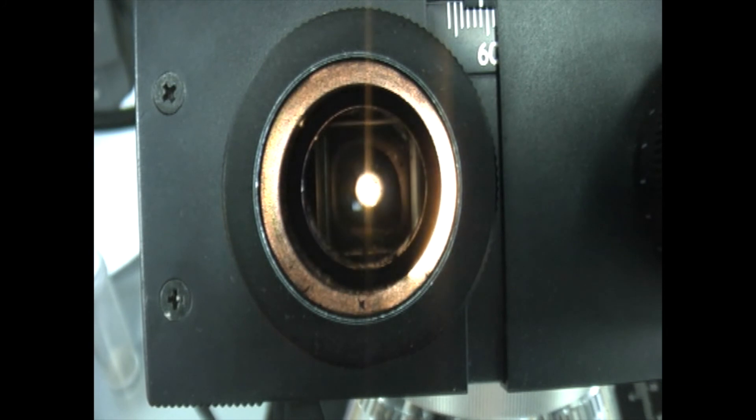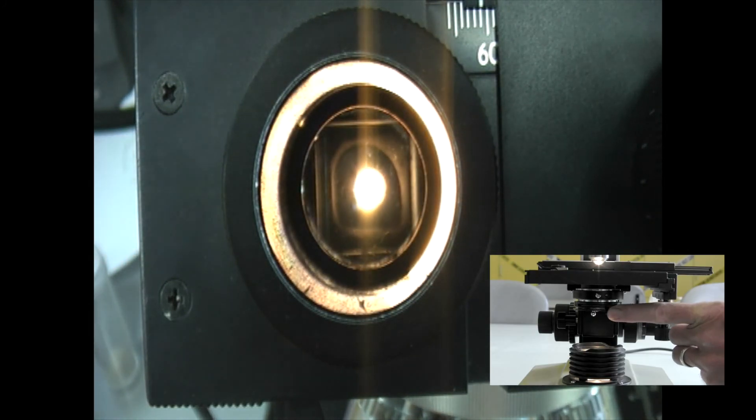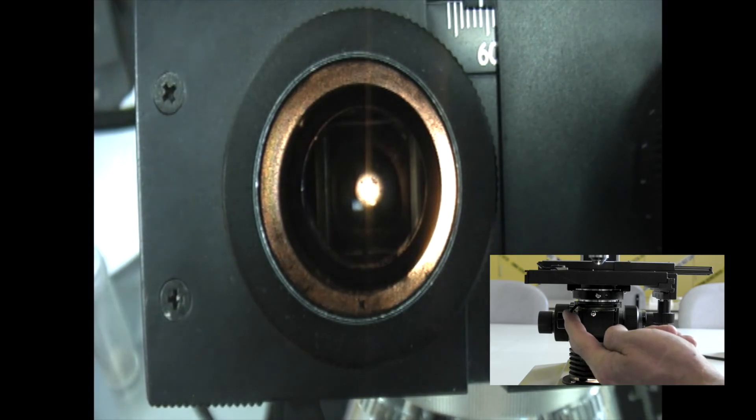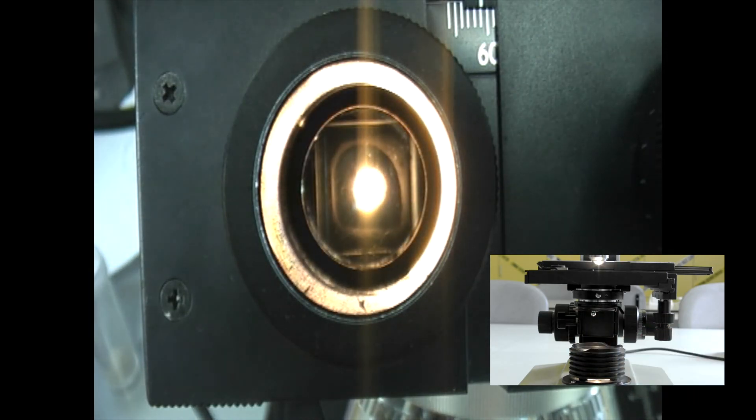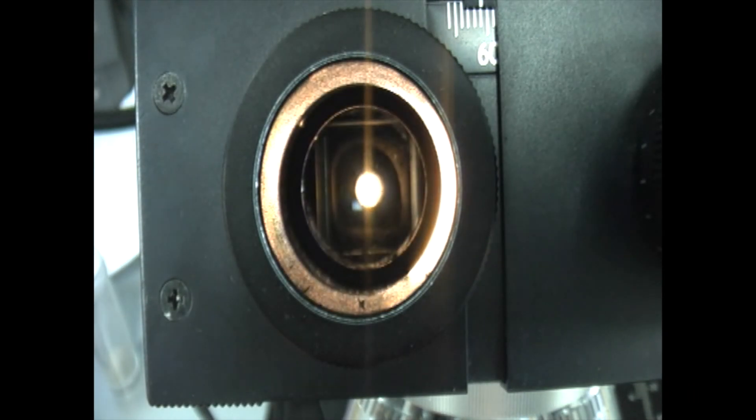Now take hold of the iris diaphragm lever, that's under the condenser and sticks out of the front, and move it back and forth. You will see the blades that make up the iris move in and out, making the aperture smaller and larger.